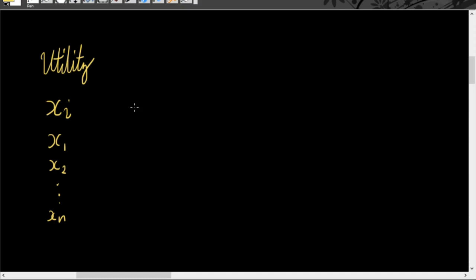So u, as we've defined a while ago, u is now a function of x sub 1, x sub 2, x sub 3, and so on until x sub n. This is what we mean by utility — the quantity of good 1 to good n that a person consumes affects his utility.